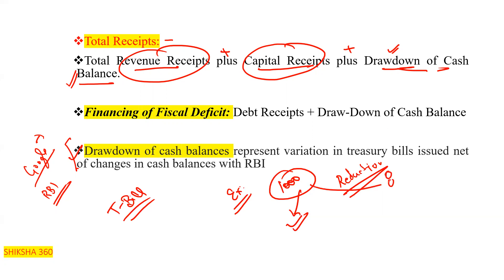The value reduces to ₹800, so on maturity the government has to pay ₹200 from itself. That comes under drawdown of cash balances — which represents variation in treasury bills issued, net of changes in cash balances with the RBI.